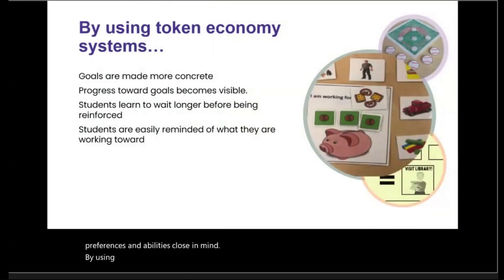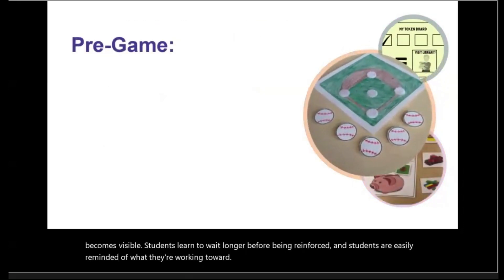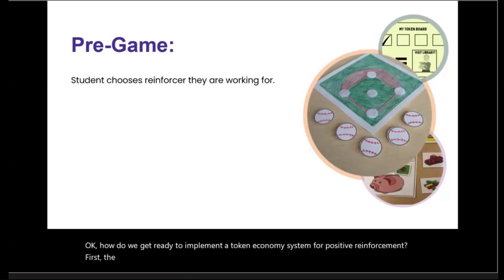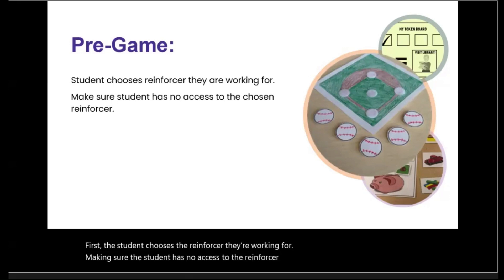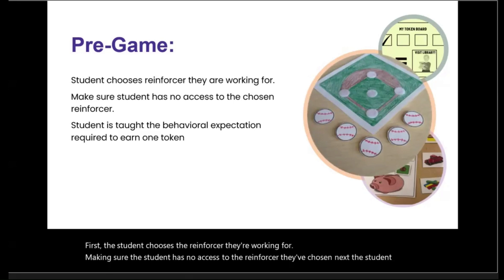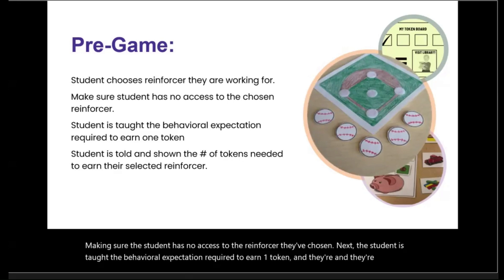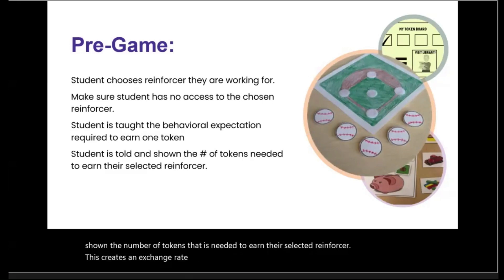By using token economy systems, goals are made more concrete and progress toward goals becomes visible. Students learn to wait longer before being reinforced and are easily reminded of what they're working toward. To implement a token economy system for positive reinforcement: first, the student chooses the reinforcer they're working for, making sure the student has no access to the reinforcer they've chosen. Next, the student is taught the behavioral expectation required to earn one token, and they're told and shown the number of tokens needed to earn their selected reinforcer. This creates an exchange rate — or a trade-in value.